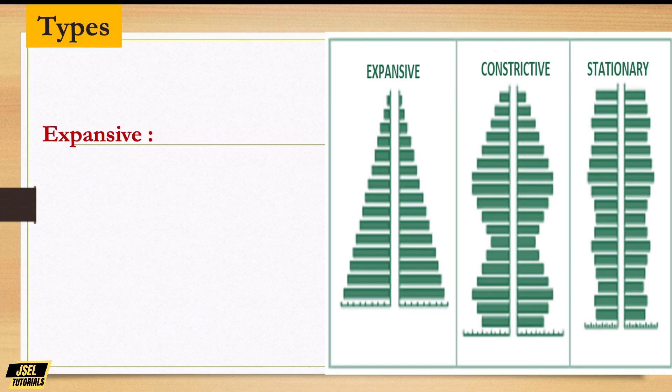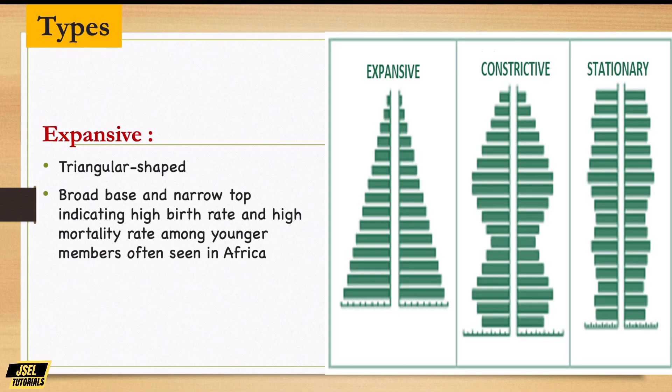Let's start with the expansive type. The expansive pyramid has a triangular shape — a broad base and a narrow top — indicating a high birth rate and high mortality rate among younger members. This is seen in most countries in Africa, which by research has a very young or youthful population.